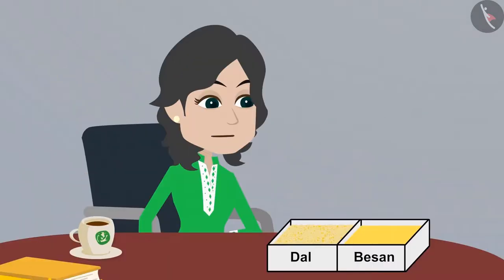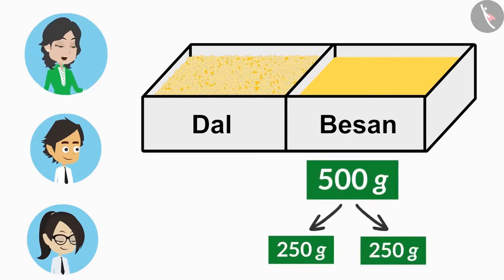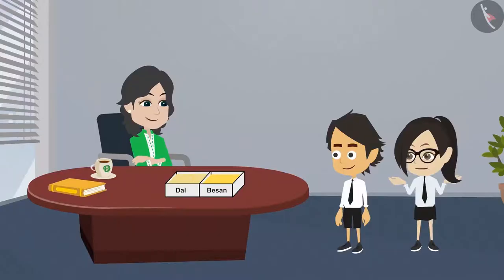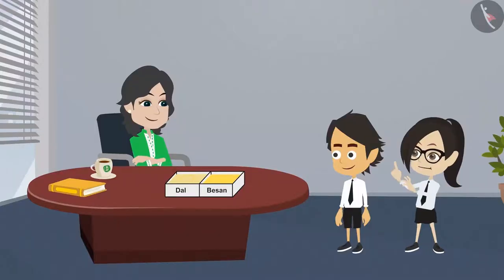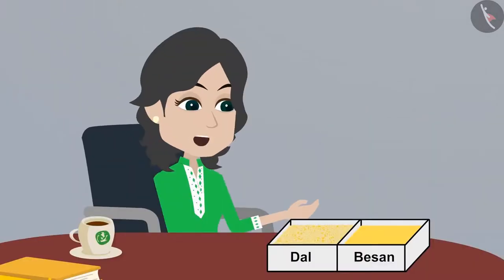Yes, if you have 500 gram besan, then you can divide it into 250 grams each. But madam, how do we measure objects in grams? We use a scale and weights to measure in grams.